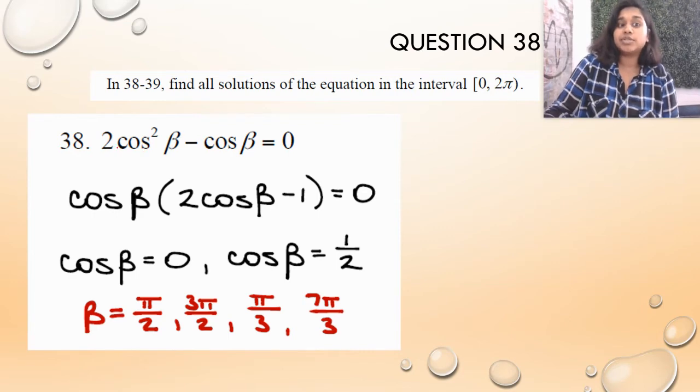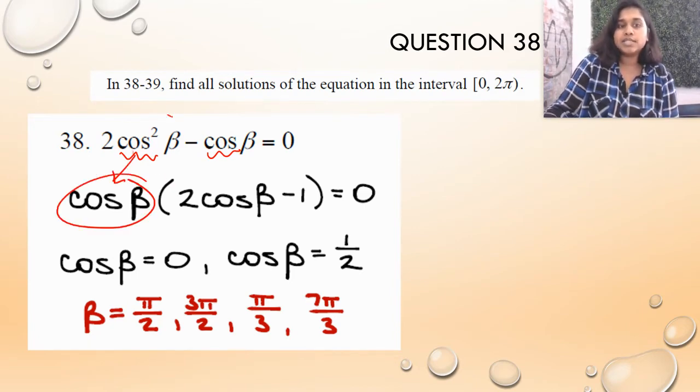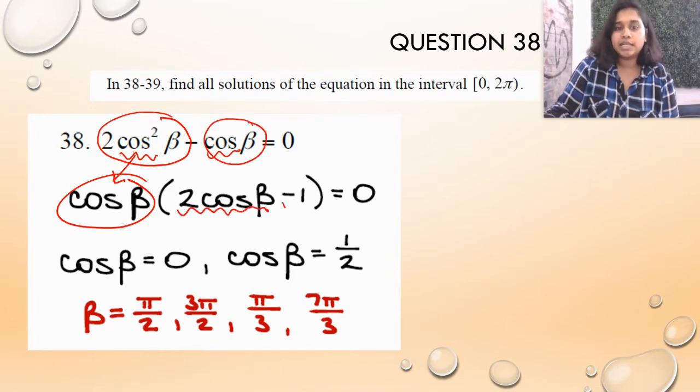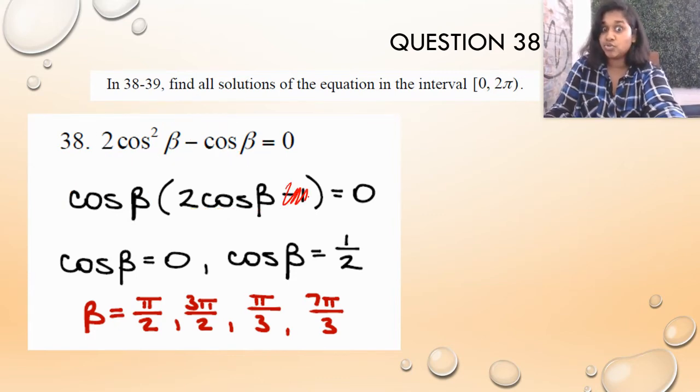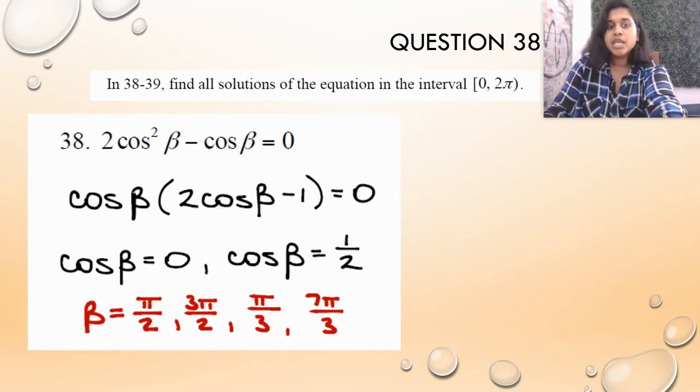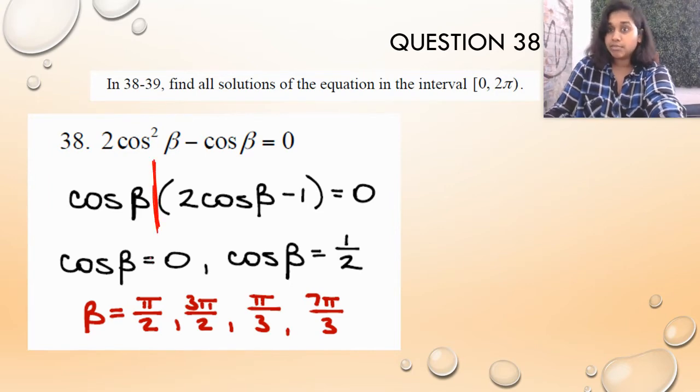Moving on to the next question. We've got some factorability going on here. I see a repeated cosine. So if I pull out that cosine, if I factor out that cosine β, what's left right here if I divide by cosine? Well, only 2 cosine β. What's left here if I divide by cosine? Negative 1, not 0. That's the most common mistake because I see kids just dropping this off. It doesn't happen that way.